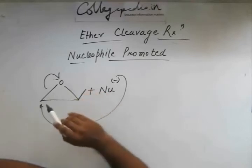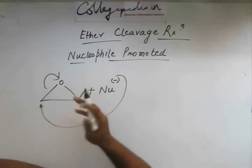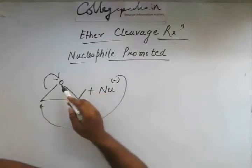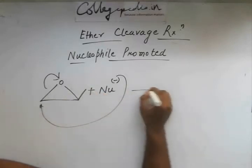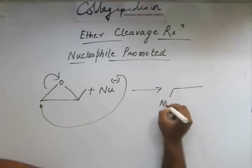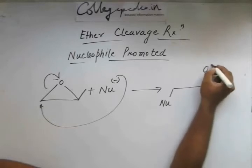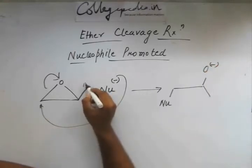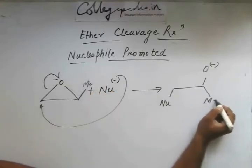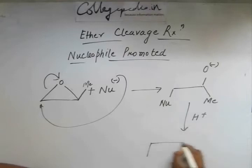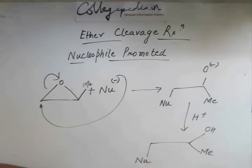The oxygen is essentially the leaving group here. If we scrutinize this reaction: oxygen gets the negative charge from the broken bond, and we are left with an O minus group on one end, the methyl group, and the nucleophile attached at the less hindered carbon. When H+ is added subsequently, we are left with OH, a methyl group, and the nucleophile attached.